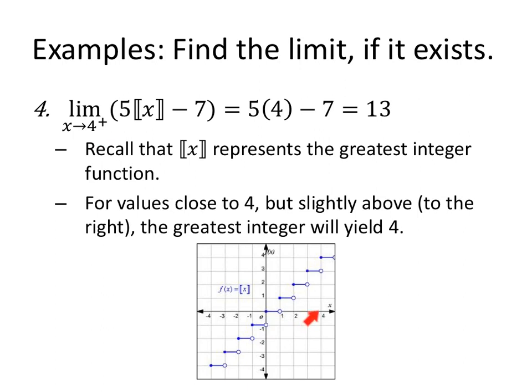For values close to 4, but to the right, so on the right of 4, as I get closer and closer to the value of 4 on X, my Y value is going to be 4. Notice, if I try to evaluate the limit as X gets close to 4 from the left, those Y values would be 3. All right, so from the right and from the left, you could have different values.